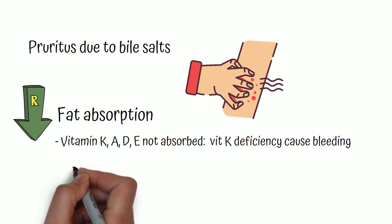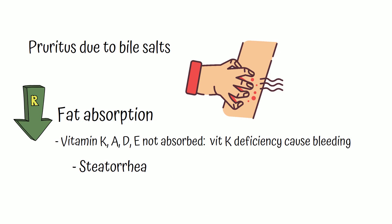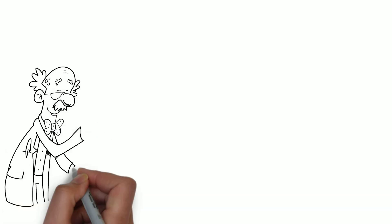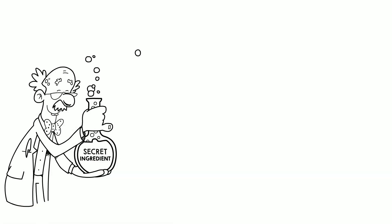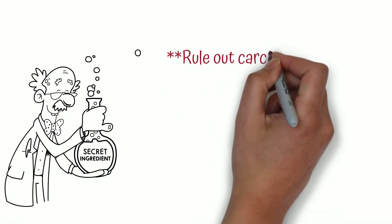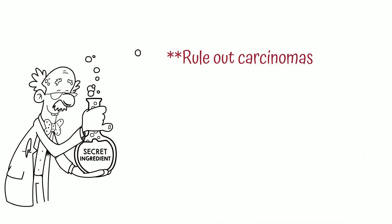Because fat is not absorbed, patients will have greasy, bulky stools — this is called steatorrhea. When you examine patients with obstructive jaundice, you should also check if the gallbladder is palpable, as this can help in ruling out carcinomas as the cause of jaundice.